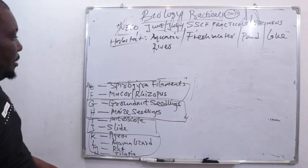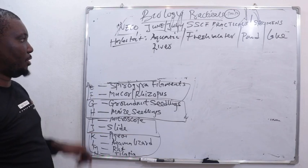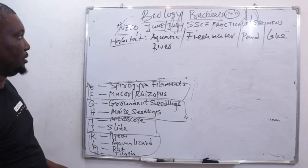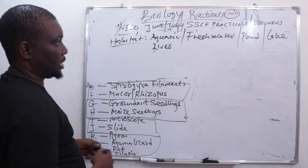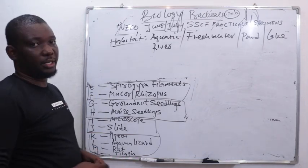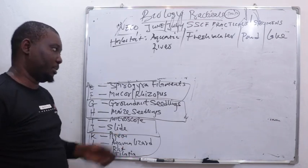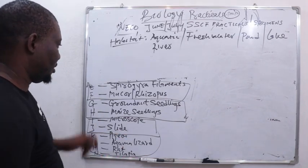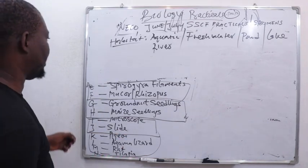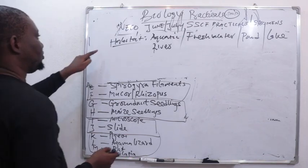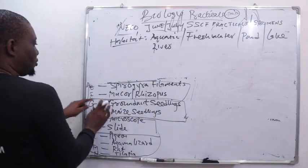So this is the habitat of Spirogyra filaments. It can also be found in the marine environment — I will explain that in a subsequent video. So that is the habitat of Specimen E, which is Spirogyra.